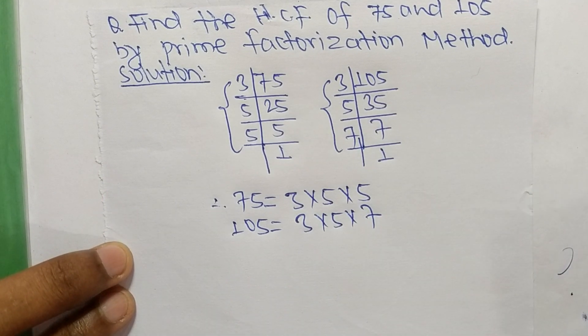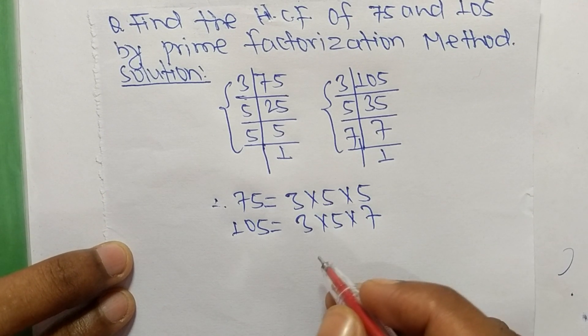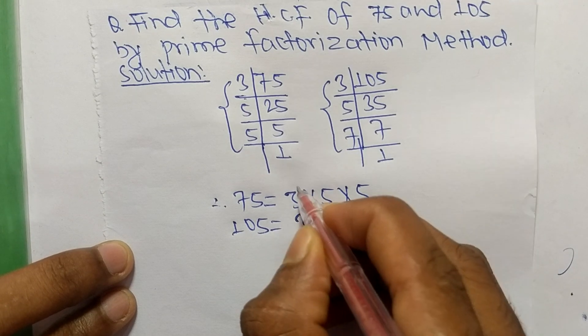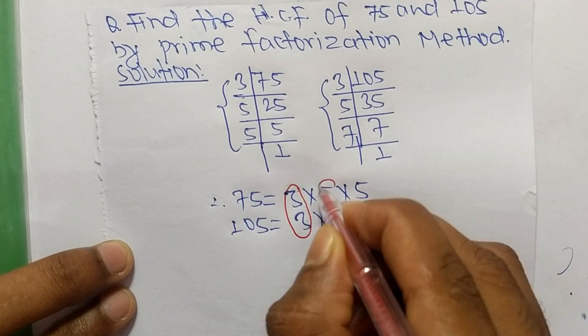Now we select the common factors in these prime factorizations. The common factors here are 3 and 5.